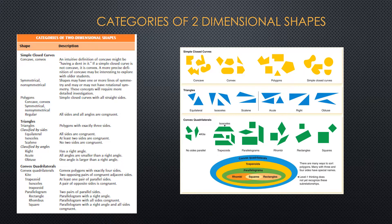Here are some categories of two-dimensional shapes. Basic ones for elementary school include polygons, divided into two categories: triangles and quadrilaterals, and then the various types of quadrilaterals.